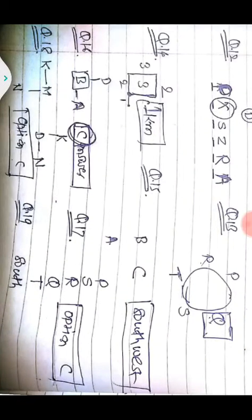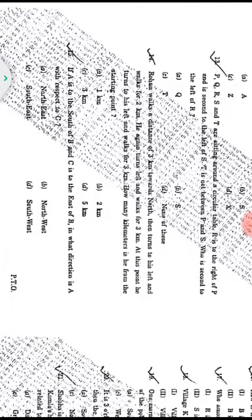Question fifteen: A is to the south of B, and C is to the east of B. In what direction is A with respect to C? Drawing the positions: B is the reference point, A is south of B, C is east of B. Therefore A is to the south-west of C. Option D, south-west, is the correct answer.